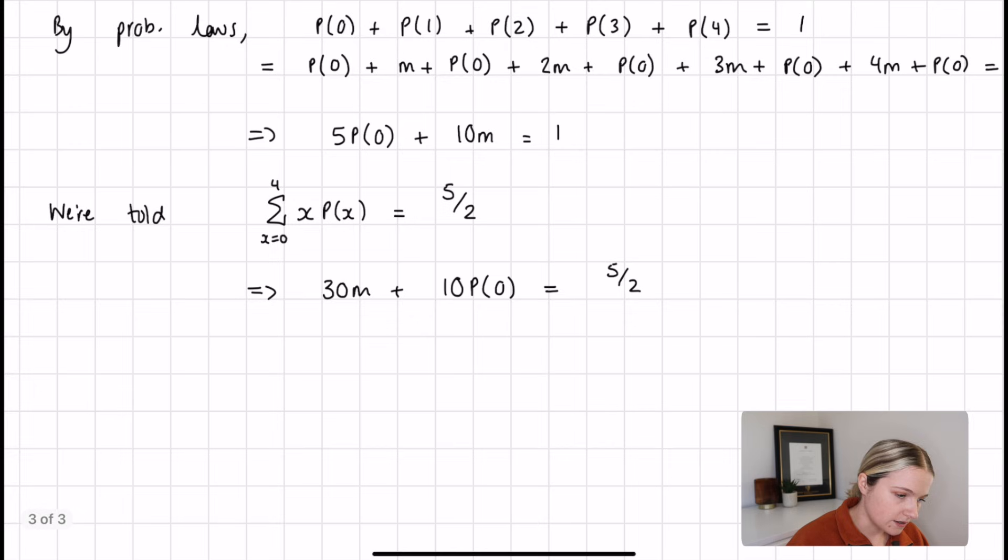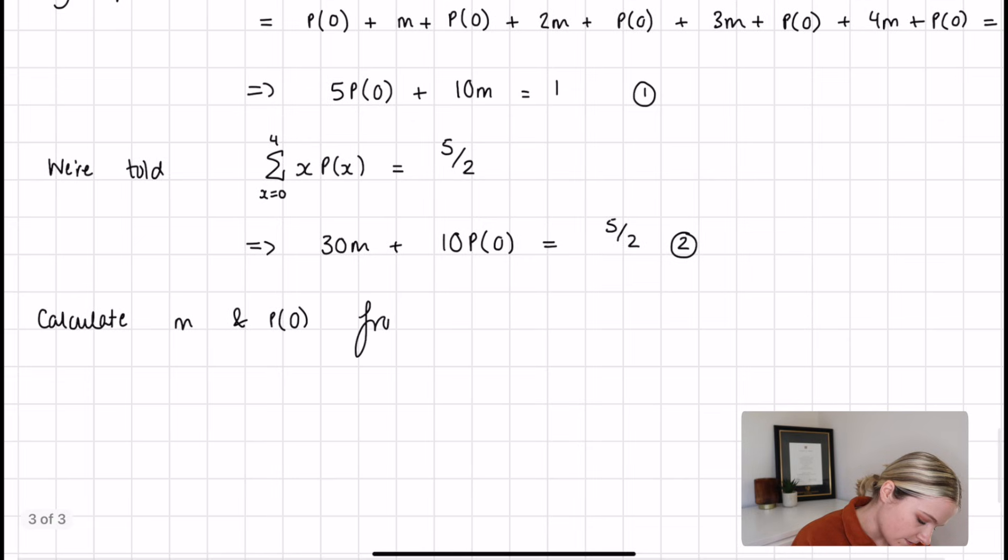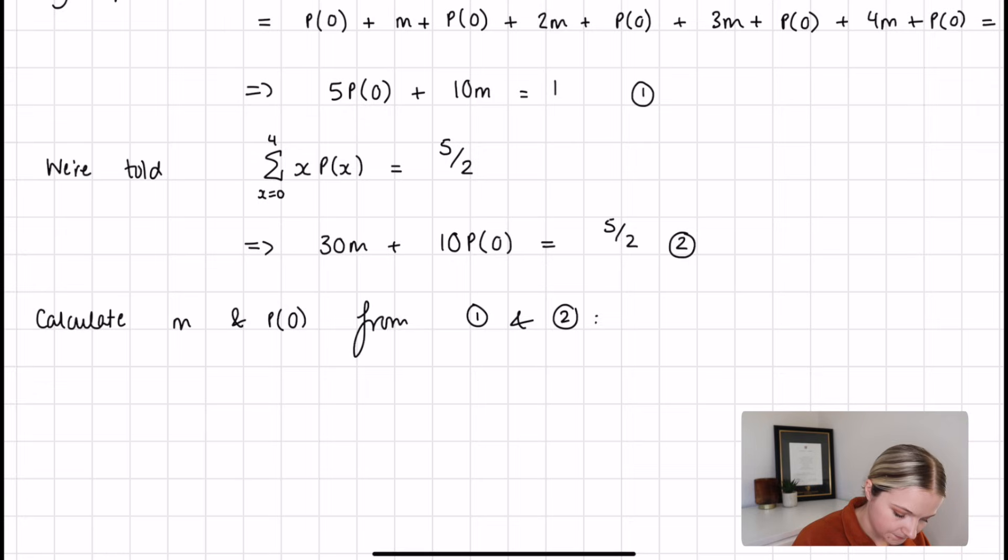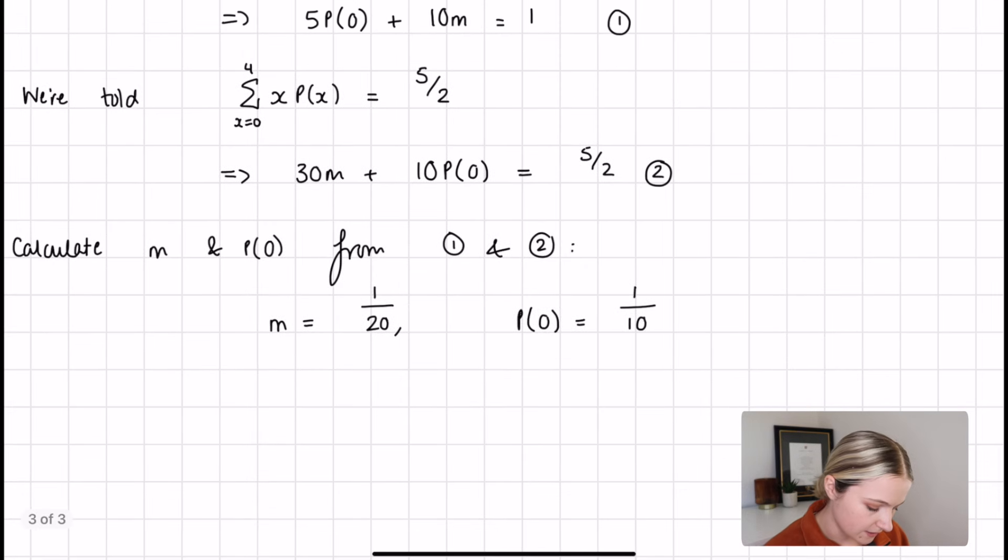I'll leave that as an exercise to the reader because it's quite simple. Calculate m and P(0) from equations 1 and 2. What we find is m is 1 over 20 and P(0) is 1 over 10. So we've used the definition that by probability definitions the summation of all probabilities must equal 1, and we've used what we've been told in the question which is that the mean is 5 over 2 to get these two equations, and then we've used simultaneous equations to calculate what m and P(0) are.